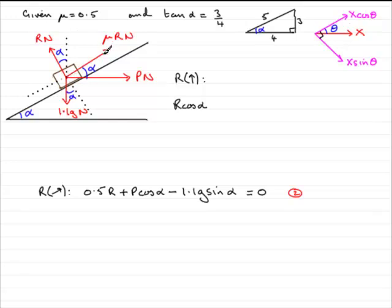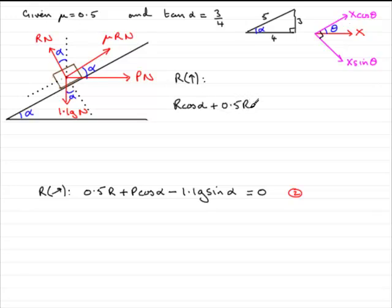Now for this force, it does not act in the vertical direction, so we split it into two components: one upwards and one horizontal. We're only interested in the upward component. Because it doesn't contain the angle alpha in the 90 degrees, it's going to be mu R sin alpha, and it will be plus. So we've got plus mu R, where mu is 0.5, times R times sine of alpha.